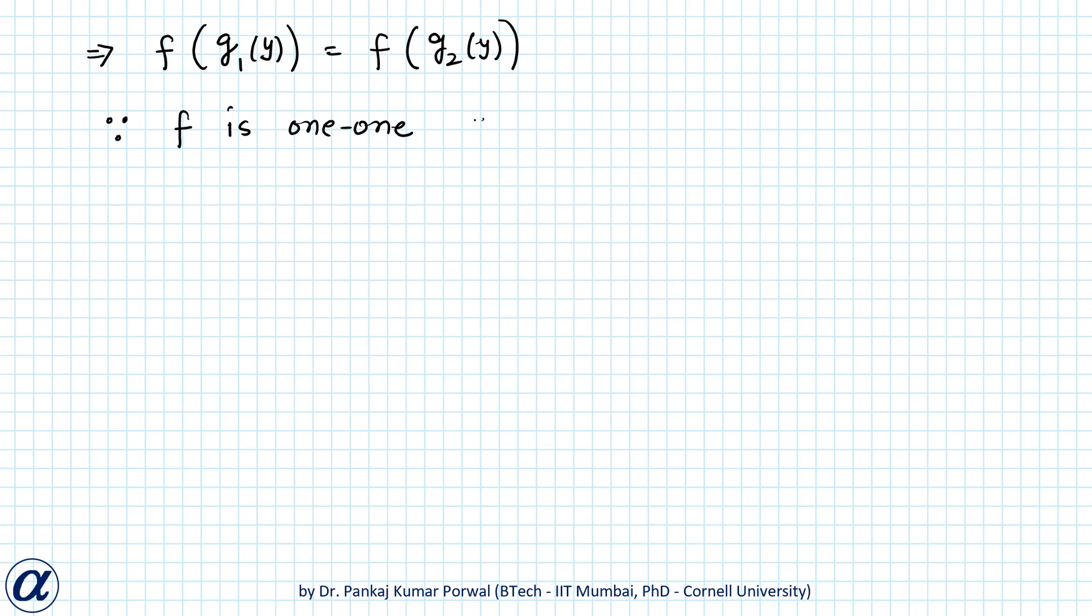Because f is one-one function, if f(x1) equals f(x2) this implies x1 equals x2. Because in this statement f of g1(y) equals f of g2(y), I get g1(y) equals g2(y).